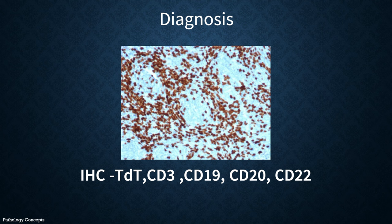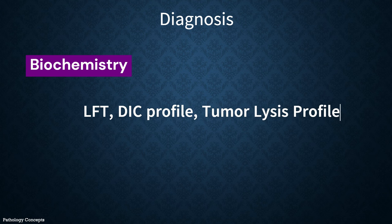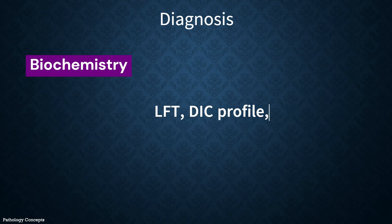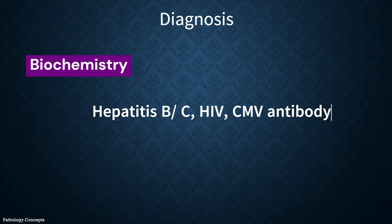Additional investigations include blood chemistry profile, liver function tests, DIC panel such as D-dimer, fibrinogen, prothrombin time, and APTT, and a tumor lysis syndrome panel such as serum LDH, uric acid, potassium, phosphate, and calcium. Other recommended tests include hepatitis B and C, HIV detection, and CMV antibody evaluations.